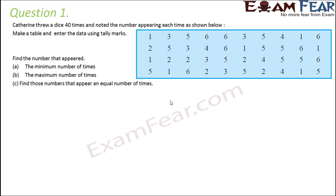So you see, in this example, 40 times a dice was thrown. So you actually have 40 data which is a huge set of data. So how do we represent it using tally marks?